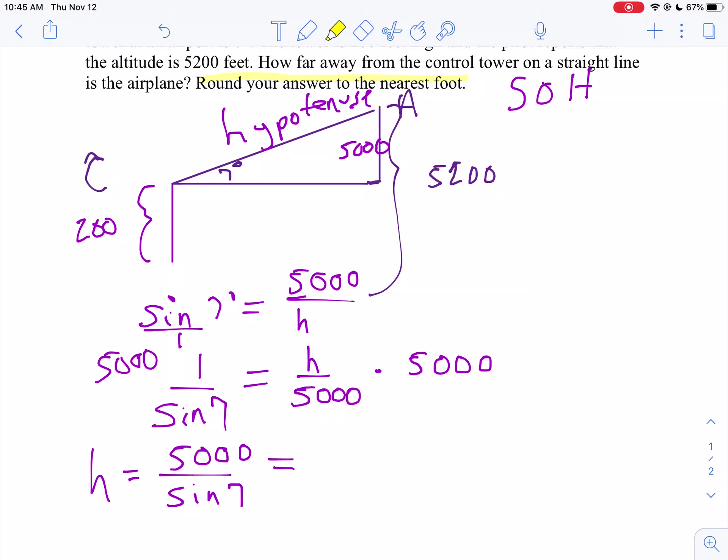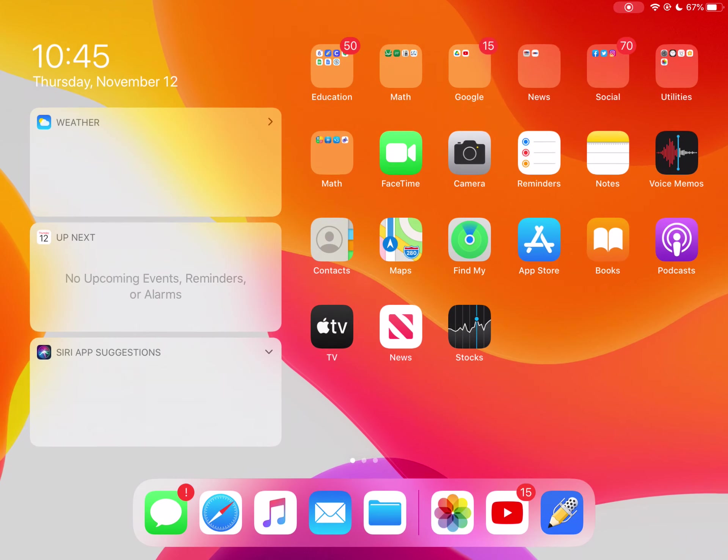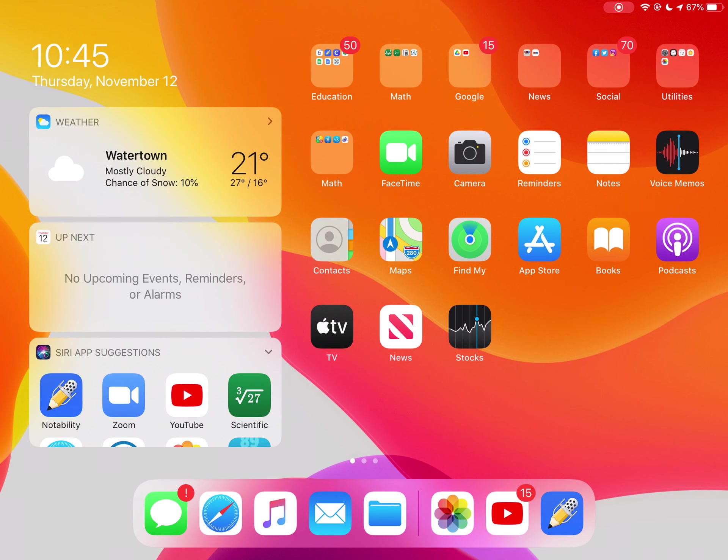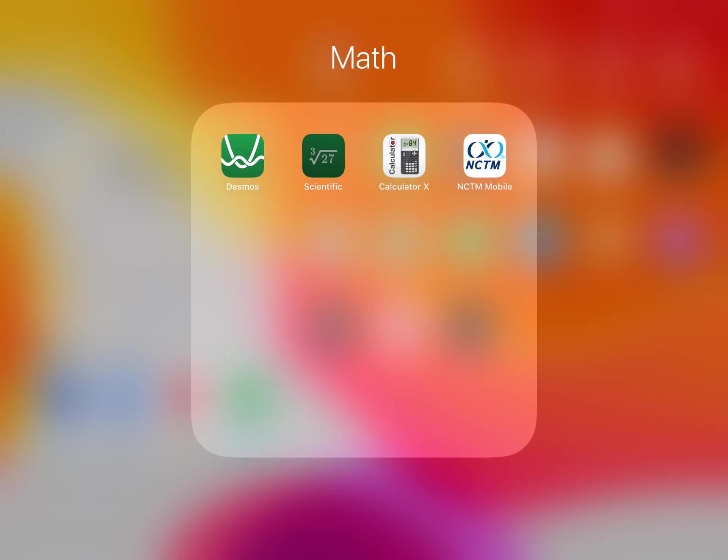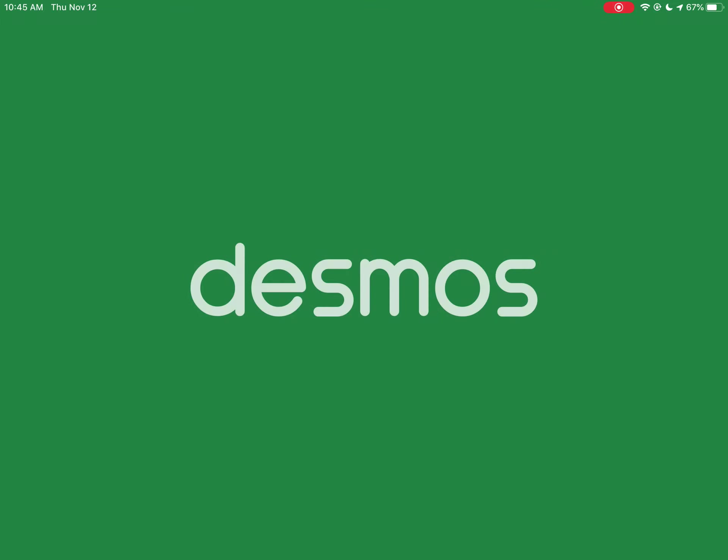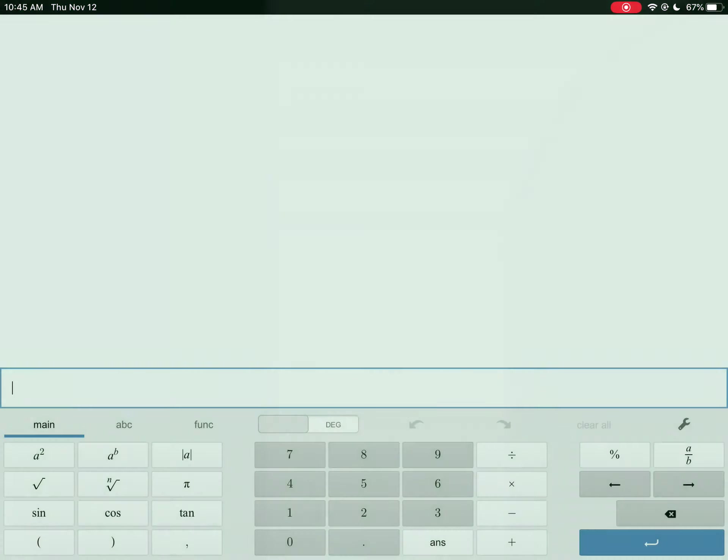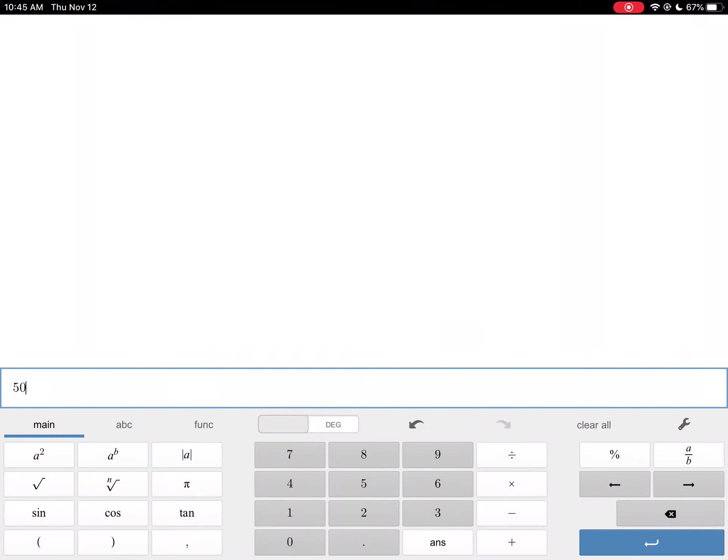So now I'm going to take out my calculator. Let me find the calculator on here. It's under math. There it is. So I'm going to take 5,000 divided by the sine of 7 degrees.